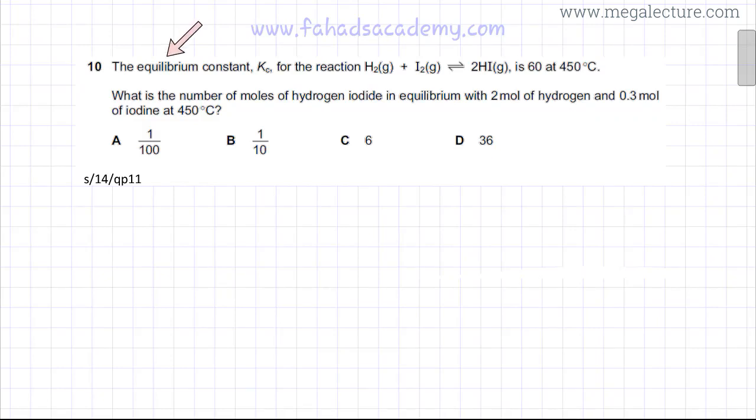The following question reads that the equilibrium constant Kc for the reaction H2 plus I2 in equilibrium with HI, all of them are gases, is 60.